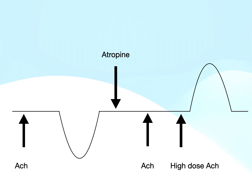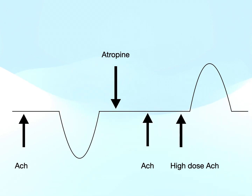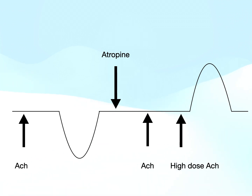After that, when we administer a high dose of acetylcholine, we will get a rise in blood pressure. This is called the nicotinic action of acetylcholine — because after blocking muscarinic receptors, the high dose of acetylcholine stimulates the Nn type of receptors present in the ganglia, both sympathetic and parasympathetic ganglia.